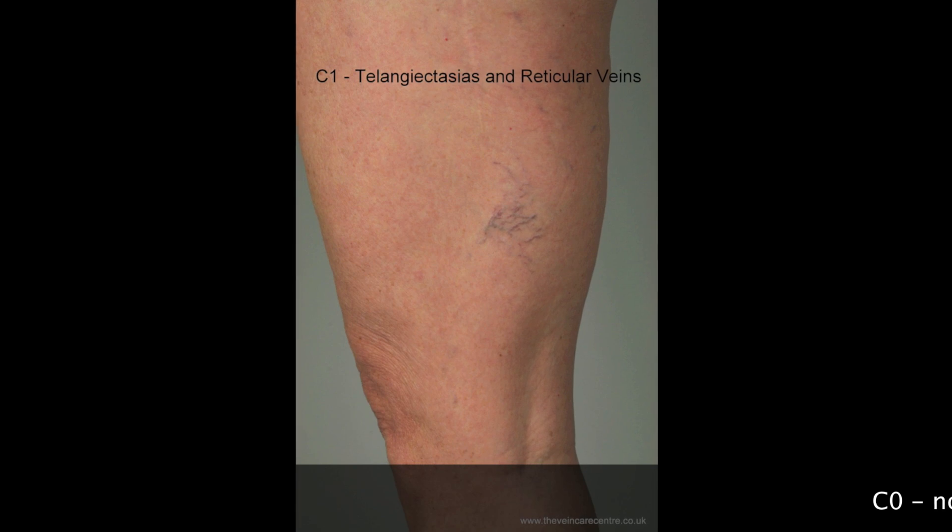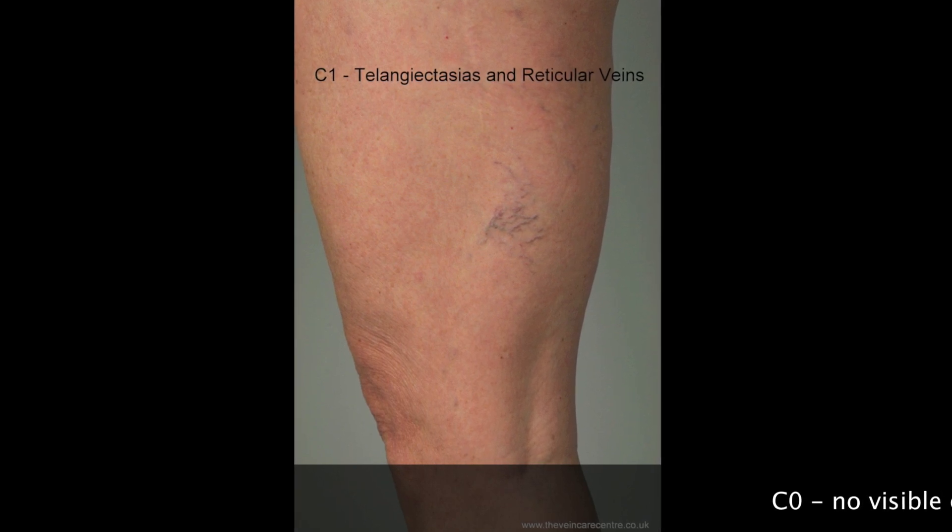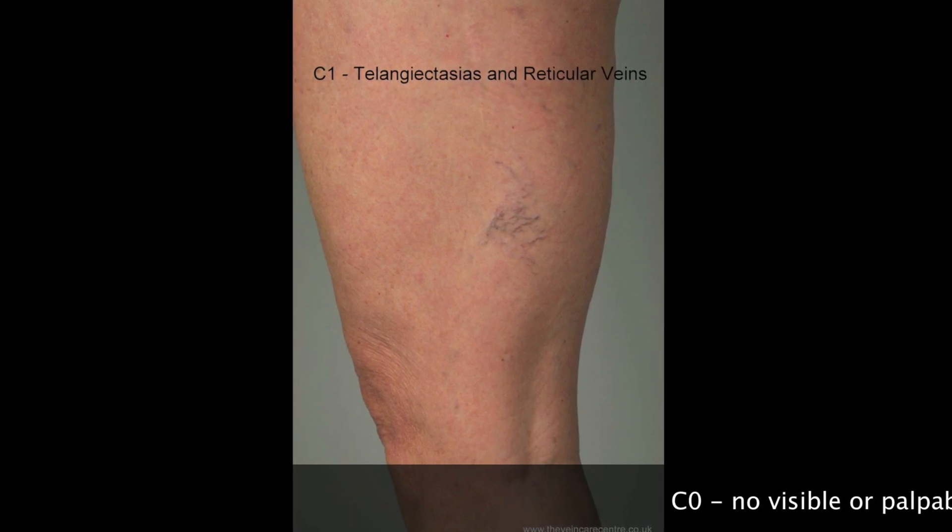The clinical classification ranges from C1 to C6, and I am going to describe these clinical stages and illustrate them with clinical photographs. The clinical classification of venous disease is based on the visual appearance of the leg with the patient standing.